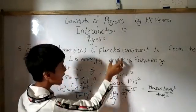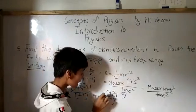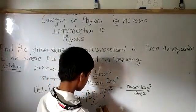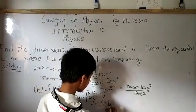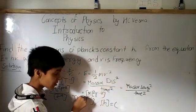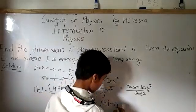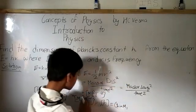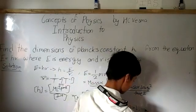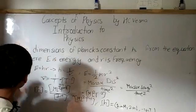We have found the dimensional formula for Planck's constant. The question asked for the dimensions, which are the exponents over the dimensional formula quantities. The dimensions of Planck's constant H are: 1 in mass (since the power of M is 1, as nothing is written we take it as 1), 2 in length (power of L is 2), and minus 1 in time (power of T is minus 1). These are the dimensions of Planck's constant H from the equation E equals H nu.